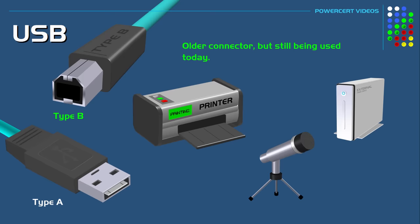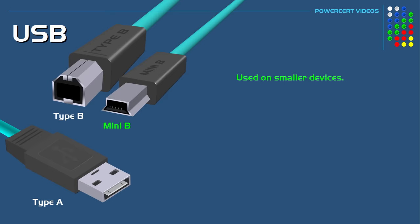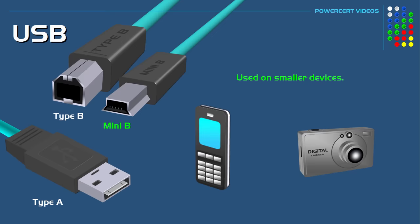Another version of a Type B connector is the Mini-B. Just like its name says, it's smaller than a Type B connector. The Mini-B is used on smaller devices such as older smartphones and digital cameras, but it's being phased out in favor of even smaller connectors.